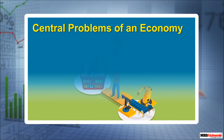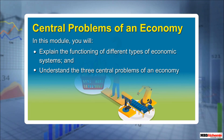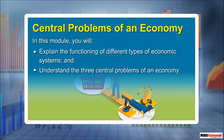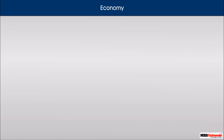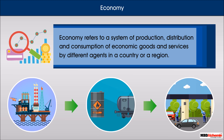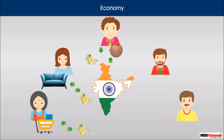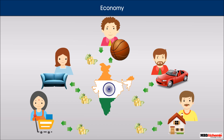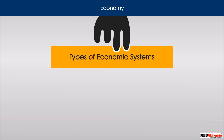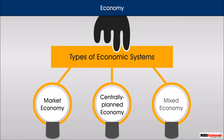In this module, you will explain the functioning of different types of economic systems and understand the three central problems of an economy. Economy refers to the system of production, distribution, and consumption of economic goods and services by different agents in a country or region. Countries and governments distribute resources and exchange goods and services through economic systems in order to control the various factors of production. There are three main types of economic systems: market economy, centrally planned economy, and mixed economy.